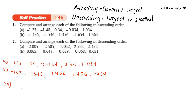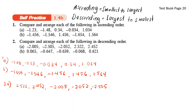Compare and arrange each of the following in descending order. Descending means largest number to smallest. The biggest number here is 2.522, followed by 2.452, then negative 2.005, negative 2.052, and finally 2.505 — wait, that means 2.522 is the largest and negative 2.052 is the smallest.